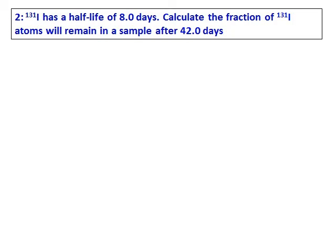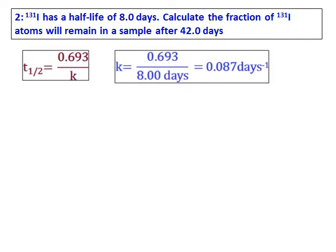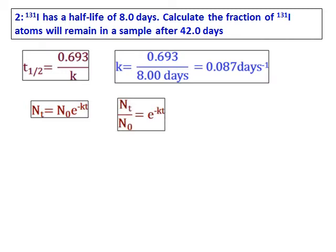Iodine-131 has a half-life of 8 days. They are asking you the fraction of iodine-131 that will remain in the sample after 42 days. The first thing we do is calculate the value of k using the half-life. Once you get the value of k, the equation we will be using is Nt equals N0 e to the power minus kt.